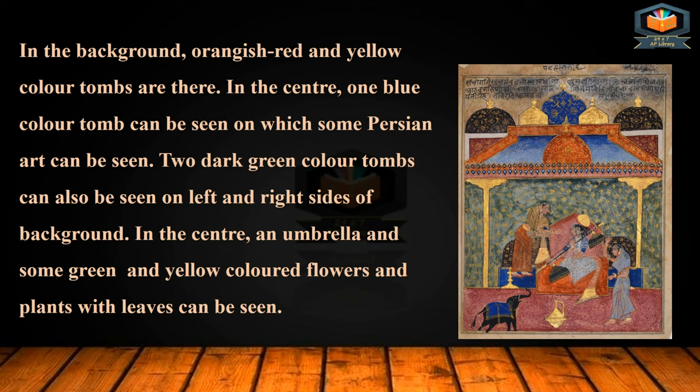Two dark green color domes can also be seen on the left and right sides of the background. In the center, an umbrella and some green and yellow colored flowers and plants with leaves can be seen.